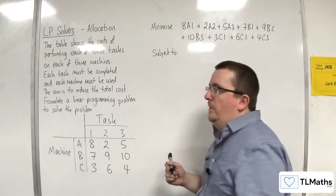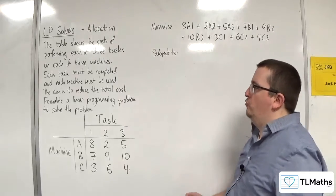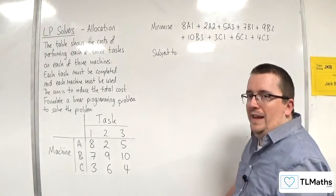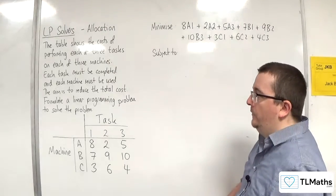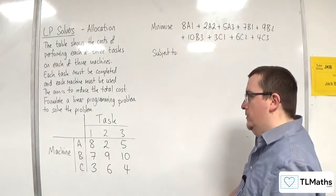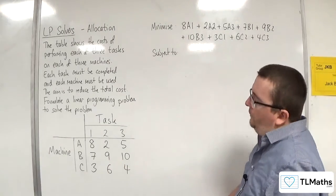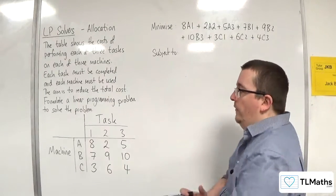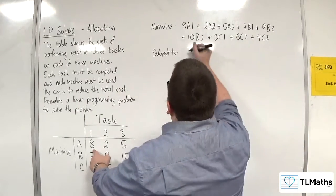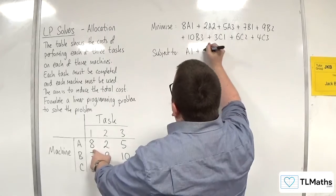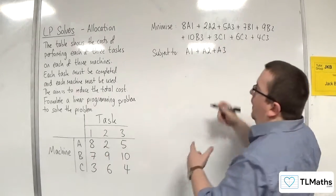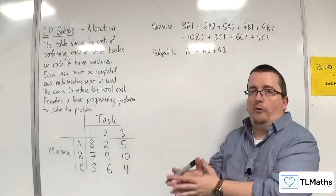And then that's going to be subject to some constraints. So we know that each machine can only do one task, because each machine has to be used. So that means that because each machine can only do one task, I can only have A doing either 1, 2, or 3. So it can only do one of those.